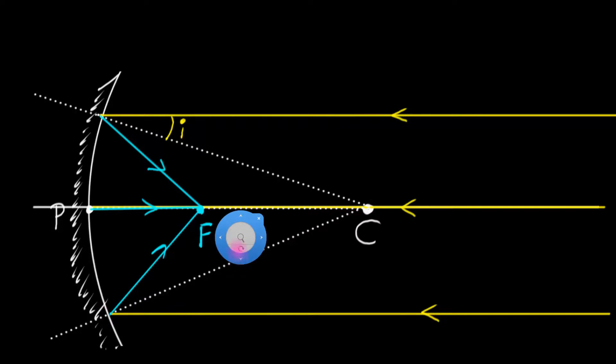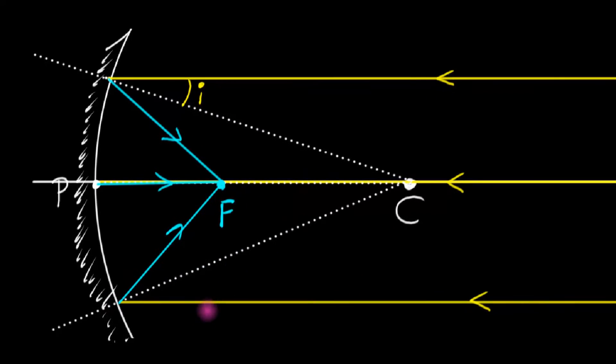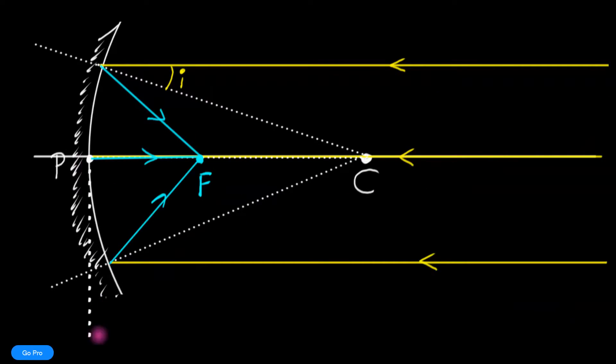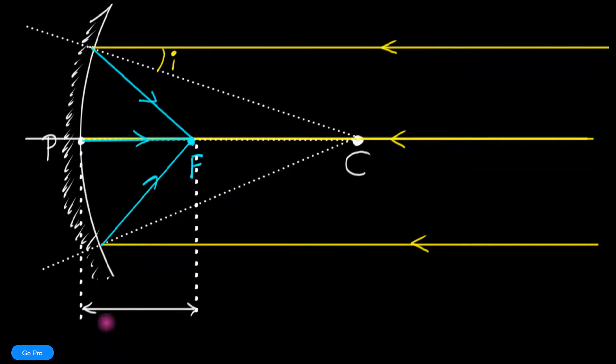The same thing is going to happen. The question now which I have is: what is this distance? Call it focal length, and that makes a lot of sense. It's just the length of the focus—how far is the focus from the mirror, from the pole P, the center of the mirror. That's what I want to figure out today.